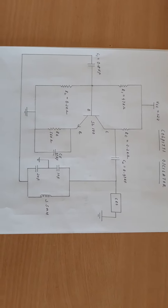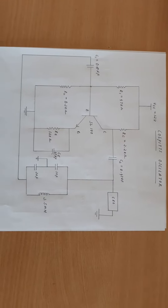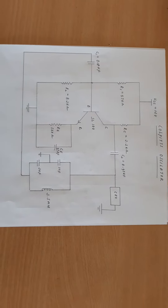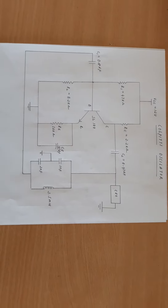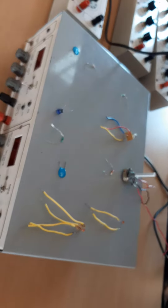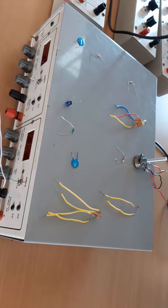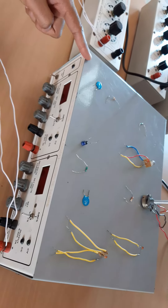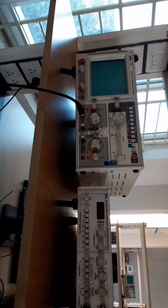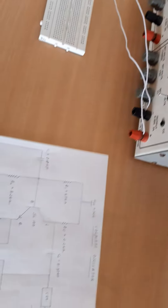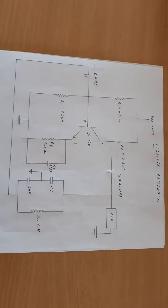Hello everyone. Today I will be explaining how to connect a Colpitts oscillator using a BJT. The components we need are resistors, capacitors, a BJT, a 10 kilohm pot, and devices like a regulated power supply, inductance box, CRO, and other components. Now I will show you how to connect the Colpitts oscillator using a breadboard.